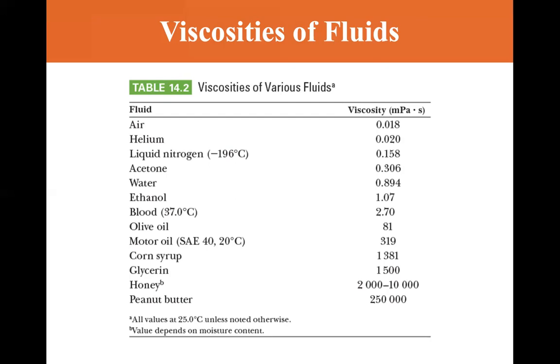corn syrup 1381, glycerin 1500, honey 2000 to 10,000, and then peanut butter 250,000. So you can see as the viscosity constant gets bigger, the flow is slower.